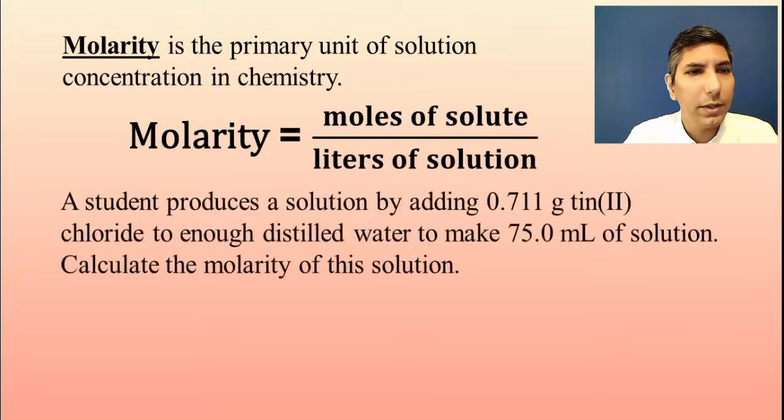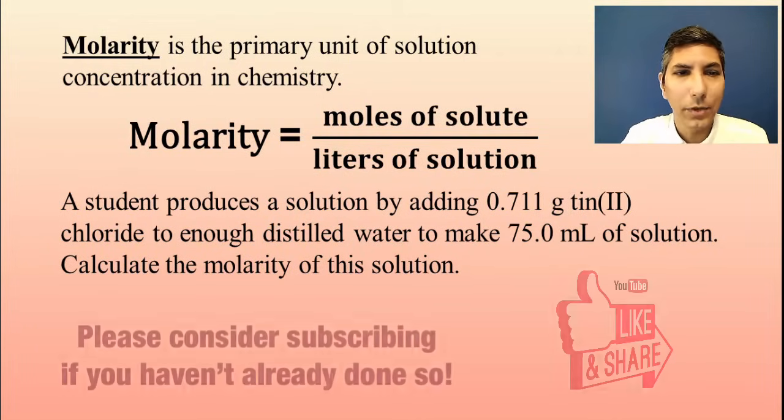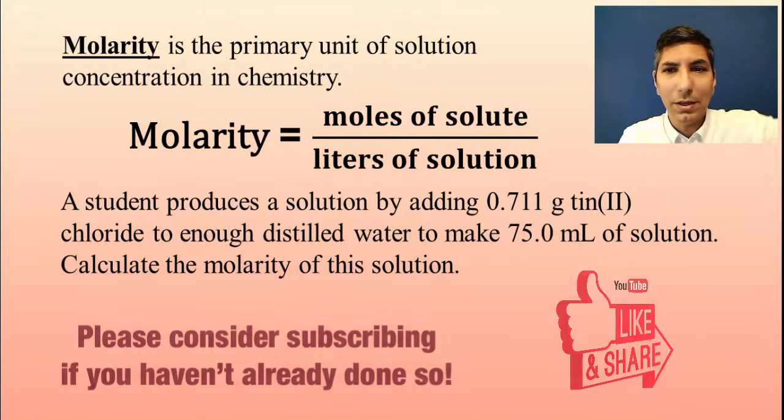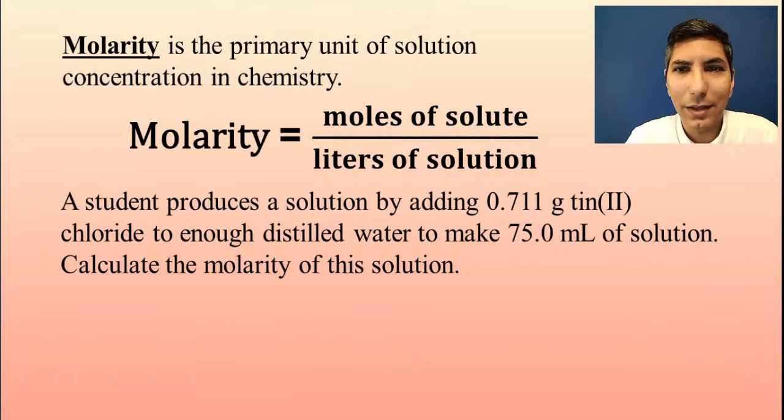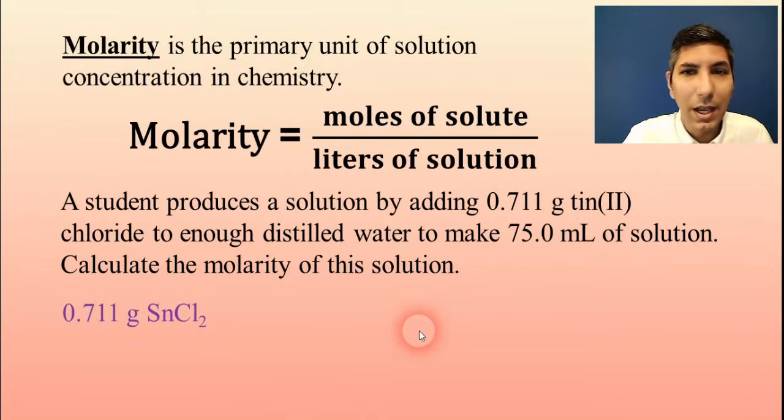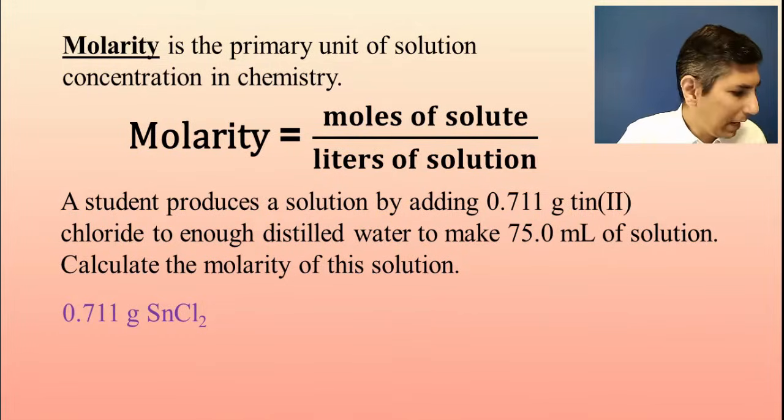Let's solve a problem. Let's say we have a student that produces a solution by adding 0.711 grams of tin(II) chloride to enough distilled water to make 75.0 milliliters of solution. Calculate the molarity of this solution. So once again, it's moles divided by liters. So we have to take the 0.711 grams of tin(II) chloride that we have given to us and convert that to moles before we can actually do our calculation.